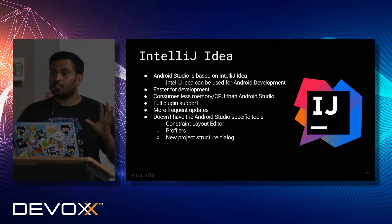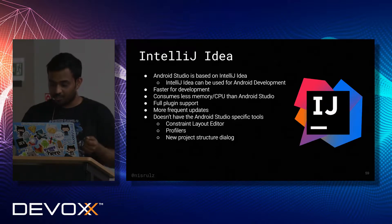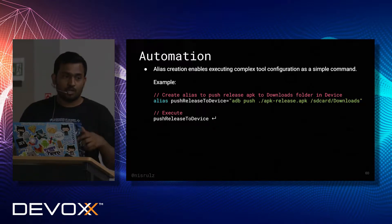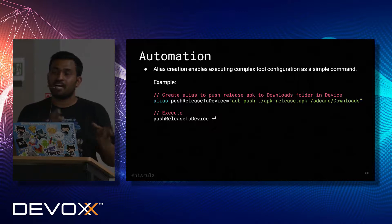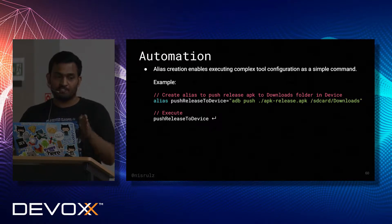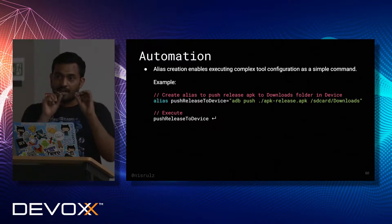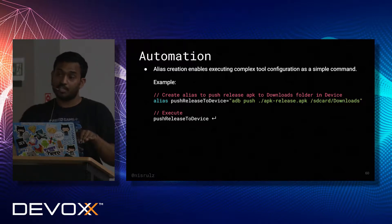All these tools together form my whole arsenal for Android development. I don't have to remember all these commands because I automate everything. Let me walk you through an example. I'm creating an alias — a named version of a full set of commands — that you put in your bash RC or ZSH RC file. For example, 'push-release-to-device' uses ADB to push an apk-release.apk file to the sdcard/downloads folder on my device. I just run the alias and the generated APK directly gets pushed to the device.